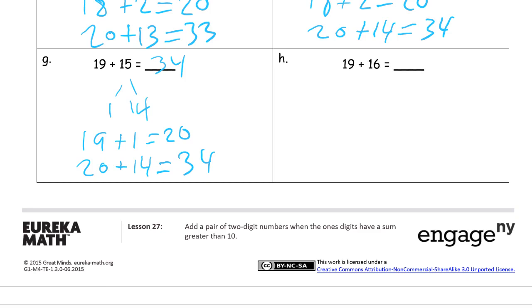And 19 plus 16. That's going to be one more. This is going to end up being 35. But I like that 1 and 15 here. 19 plus the 1 equals 20. And now we're just adding two 10s to the 15. 35.